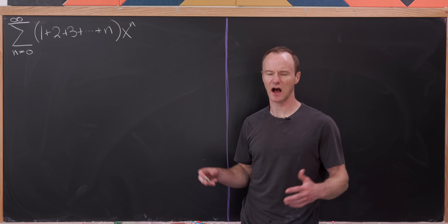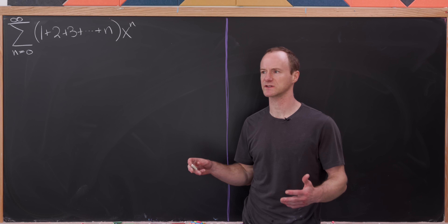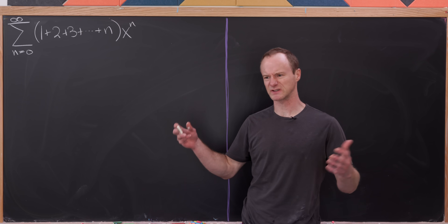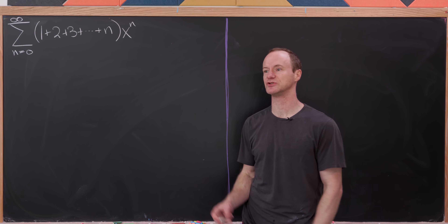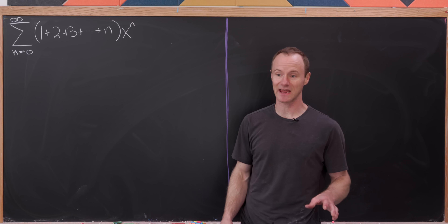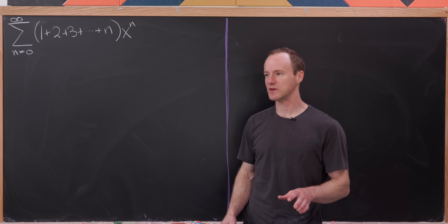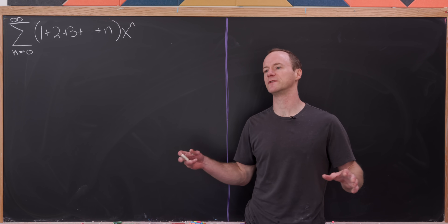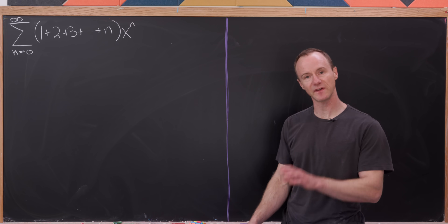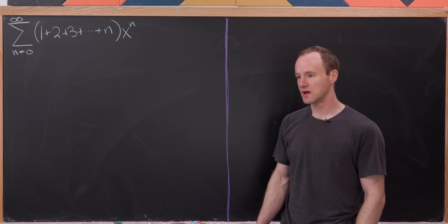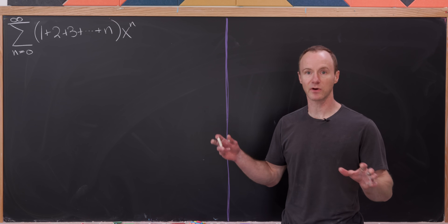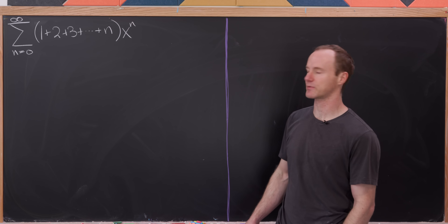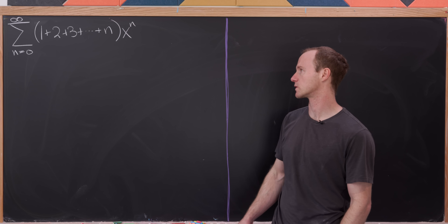Generating functions are used in combinatorics often to prove that two types of countable objects are the same, maybe without doing a direct combinatorial proof — a generating function type proof. This is actually done in the style of number theory popularized by Ramanujan, for what it's worth.